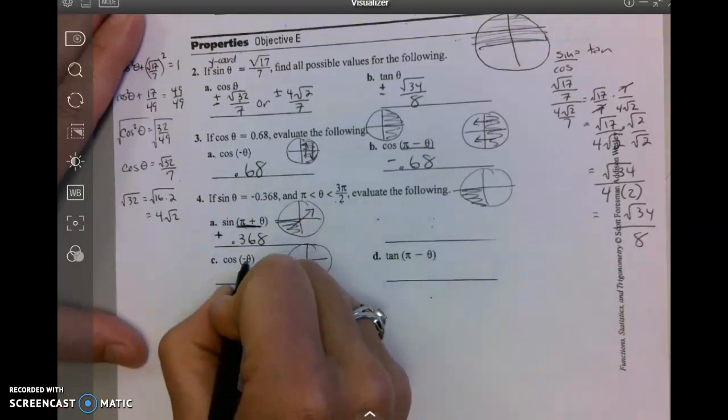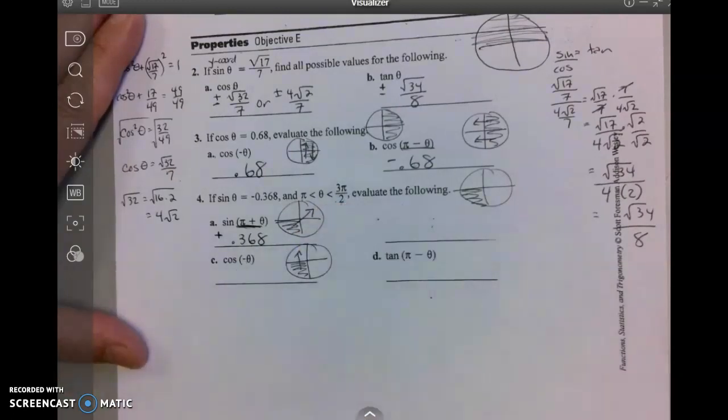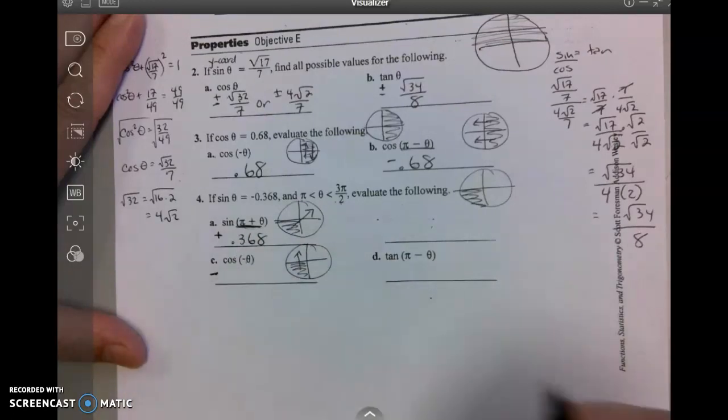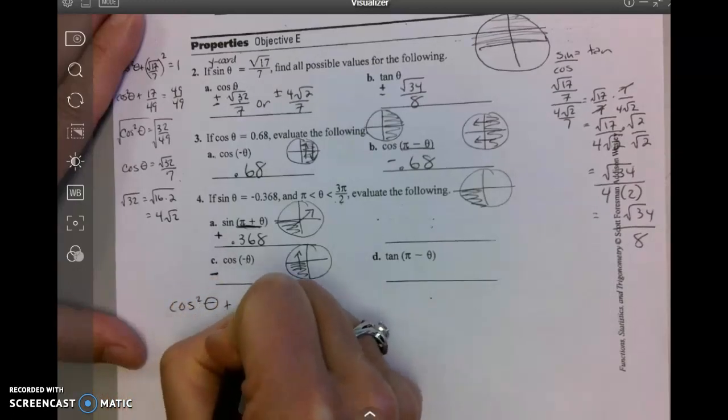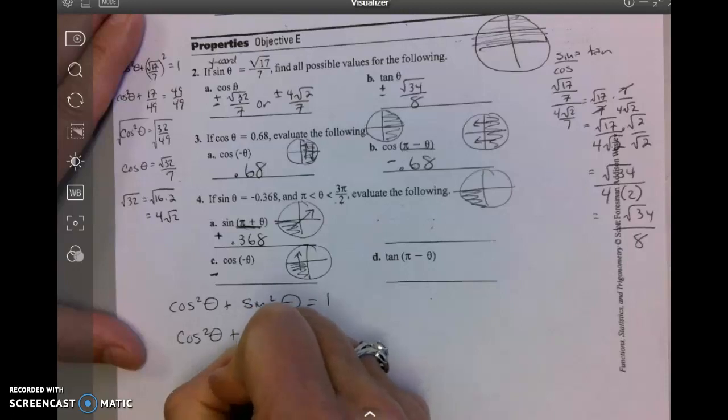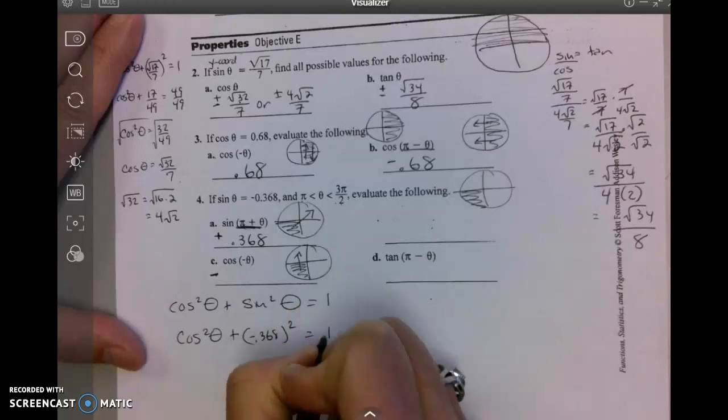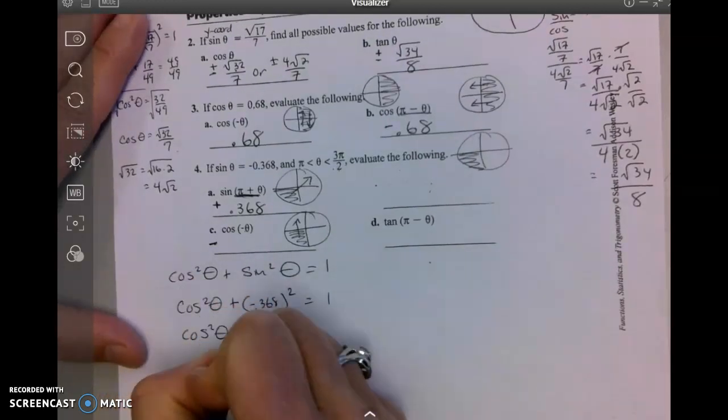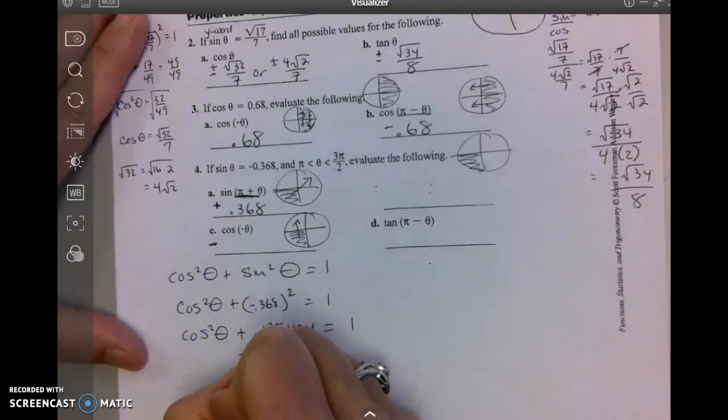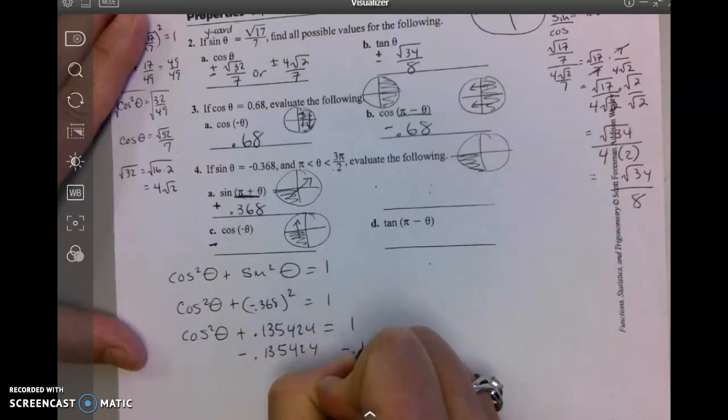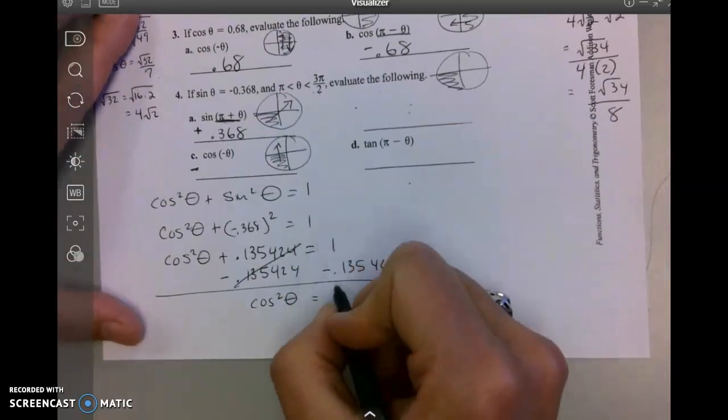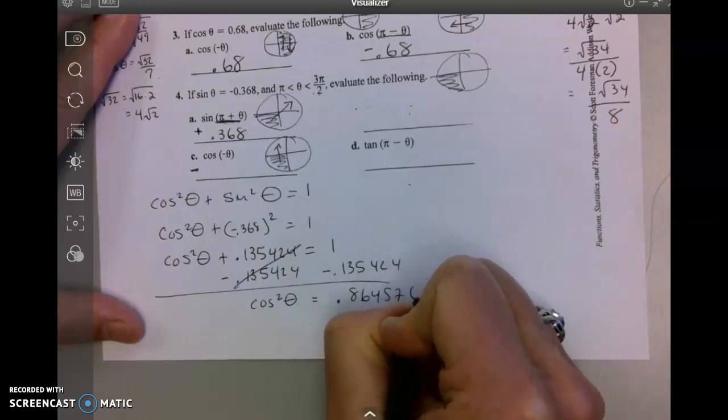Start in that third quadrant again. Opposite of theta means move up and down, and cosine is still going to be negative there. But I got to find cosine, so I'm going to use my Pythagorean identity theorem. Cosine squared of theta plus sine squared equals one. Sine is -0.368, so cos²θ + (-0.368)² = 1. Cosine squared of theta plus, when I square that I get 0.135424, equals 1. I'm going to subtract that from both sides and I get cosine squared equals, when I subtract that on my calculator, I get 0.864576.